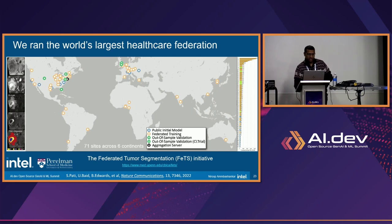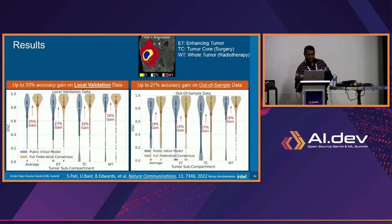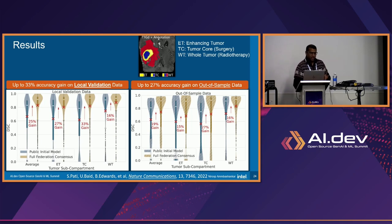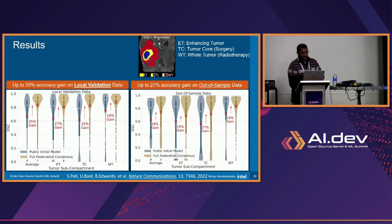The task was brain tumor segmentation, identifying three regions: enhancing tumor (ET), tumor core (TC), and whole tumor (WT). The blue color is the tumor core, the enhancing tumor is what doctors want to see to treat the surrounding regions, and for radiotherapy you treat everything in the red regions. Accurate segmentation is critical for correct treatment. We saw a 27% gain in local validation accuracy for ET and TC, a 33% gain for TC, and for out-of-sample the gains were 15% and 27% for each respective region.